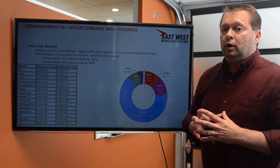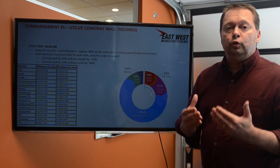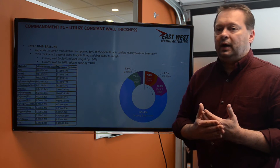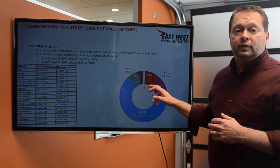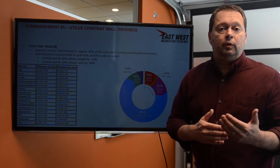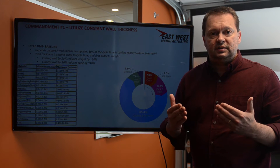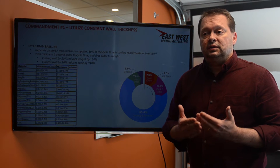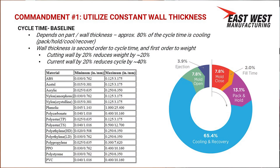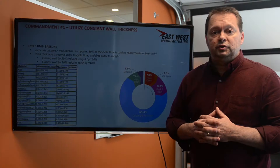Another benefit of having a constant wall is that it will cool in the least amount of time possible. The majority of your cycle time — the time it takes for the part to eject from the mold — is wrapped up in cooling. So the less wall thickness you have and the more consistent your wall thickness is, the less cooling time and the less money you'll spend on that part. Basic wall thicknesses for given materials are shown in this table as a good starting reference.